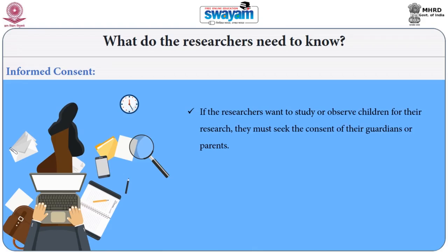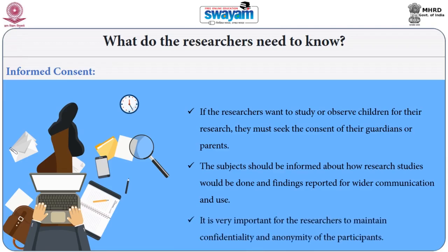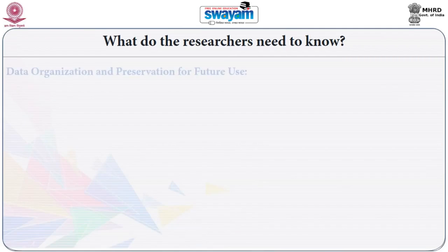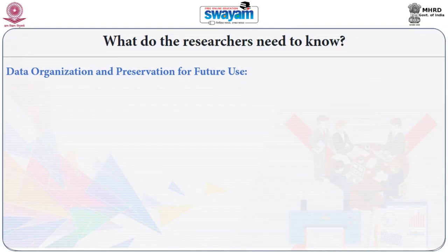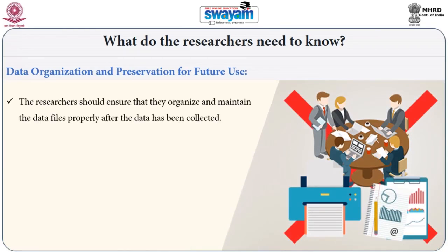If researchers want to study or observe children for their research, they must seek the consent of their guardians or parents. Subjects should be informed about how research studies would be done and findings reported for wider communication and use. It is very important for researchers to maintain confidentiality and anonymity of the participants.